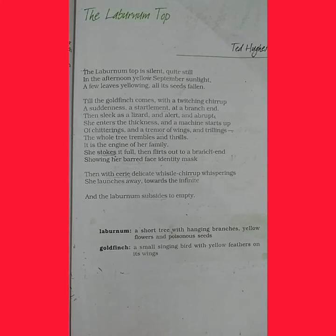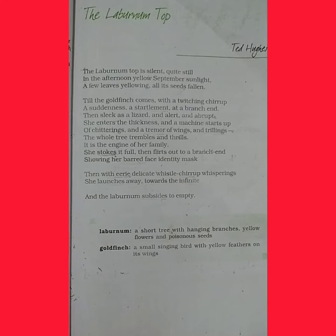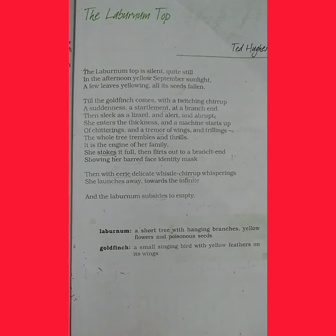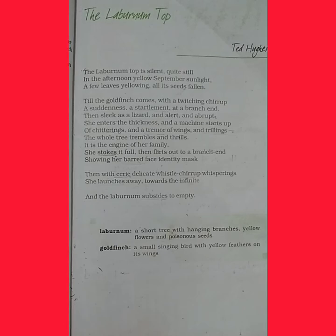The laburnum top is silent, quite still. In the afternoon, yellow September sunlight. The poem begins with silence and no movement. September here suggests melancholy — very sad — and sunlight. A few leaves yellowing, all its seeds fallen.